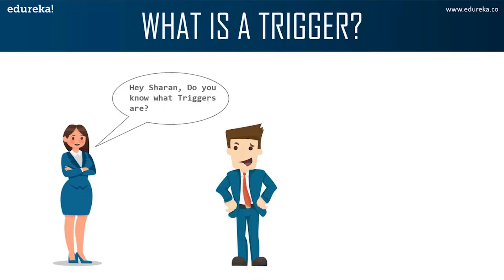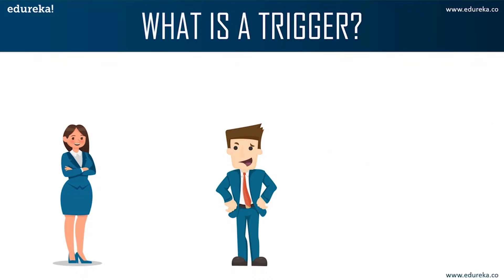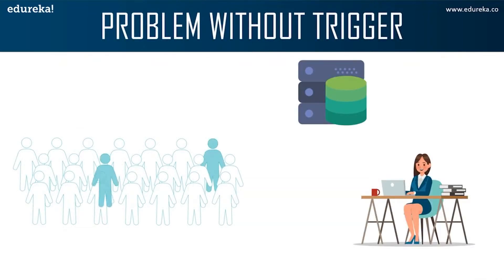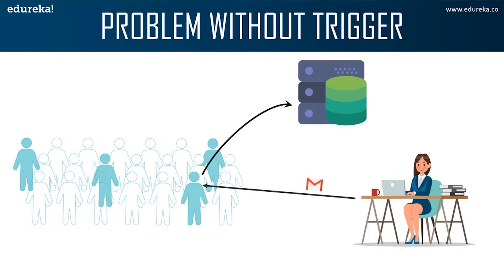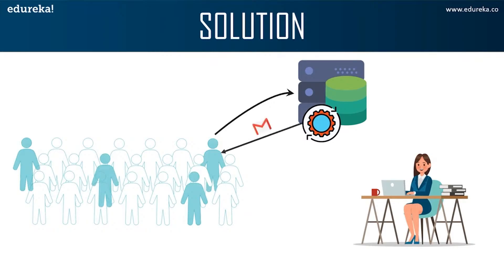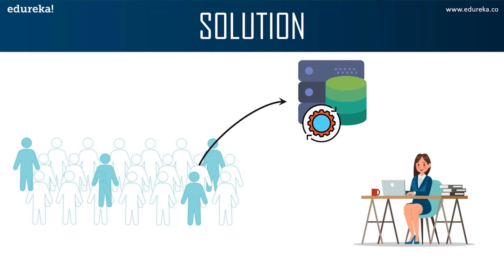Here we can see Anna is asking Sharon about triggers. Sharon imagines a trigger like falling dominoes. Anna is a marketing officer in a company. When new customer data is entered into the database, she has to send a welcome email to each new customer. If it's one or two customers, Anna can do it manually, but what if the count is more than a thousand? It will be repetitive and tiring. In such a scenario, triggers come in handy — Anna can easily create a trigger which will automatically send a welcome email to new customers once the data is entered into the database, and she doesn't have to monitor it frequently.